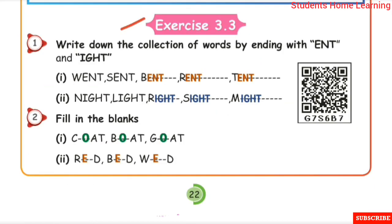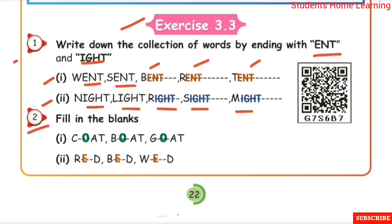Exercise 3.3: Write down the collection of words by ending with ENT and IGHT. For ENT words: BENT, SENT, RENT, TENT. For IGHT words: Night, Light, Right, Sight, Might. Fill in the blanks — given C: C-A-T, B-A-T, G-A-T. Write one letter in each blank. Next: R-E-D, B-E-D, W-E-D.